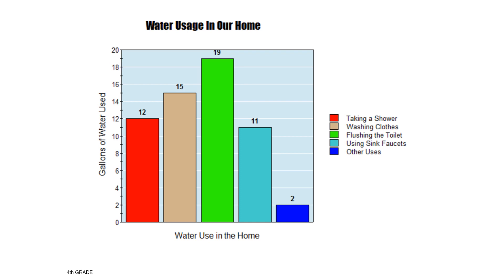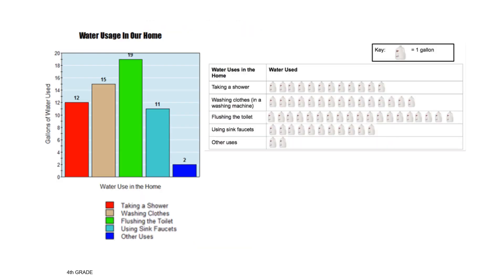Here is the same data about water usage in our home as a bar graph. What are some things that are the same about the two representations? Maybe you noticed that both representations tell me what we're measuring in — gallons of water. On the bar graph, it's listed as the label on the y-axis, and in the table, it's the key.